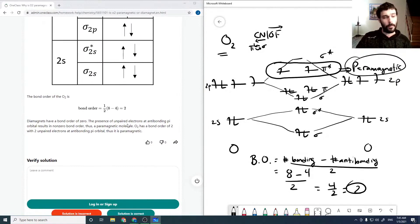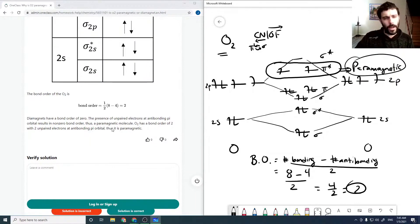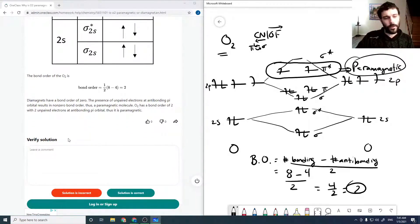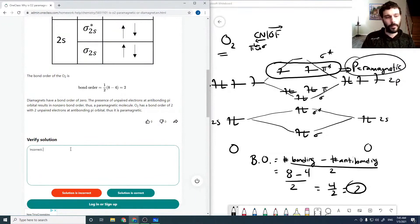And so this is not true. Diamagnets have a bond order of 0, which is not true. In fact, in a question I just did for C2 2-minus, that is diamagnetic and has a bond order of 3, so that's just false. And that's all electron spins paired.